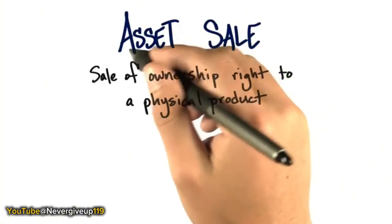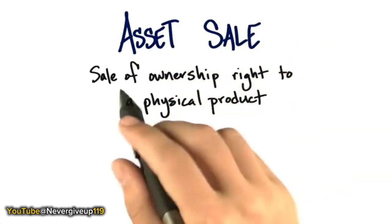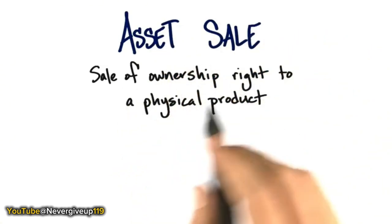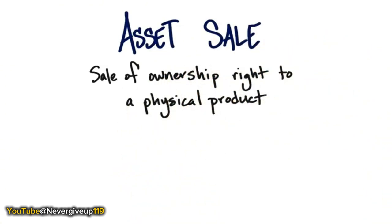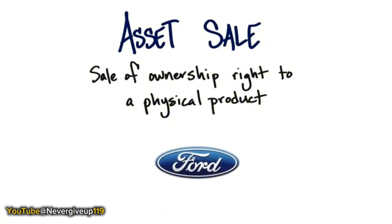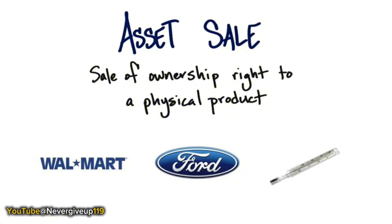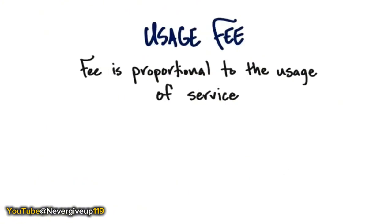One type of revenue model is an asset sale — a direct sale of ownership rights to a physical product. In a physical channel, best examples include buying cars from Ford, General Motors, or Nissan, buying products at Walmart's massive stores, or going to your local hardware store to buy thermometers.